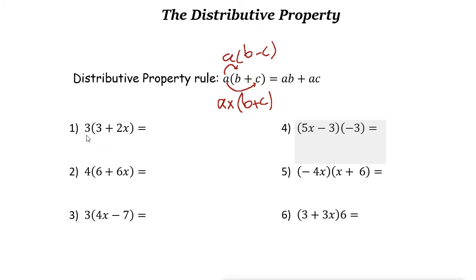Here we have 3(3 + 2x). So we can multiply 3 times 3, it is 9. Plus 3 times 2x. The plus sign is here, so we write the plus. Whatever sign that you have here, we put it there.